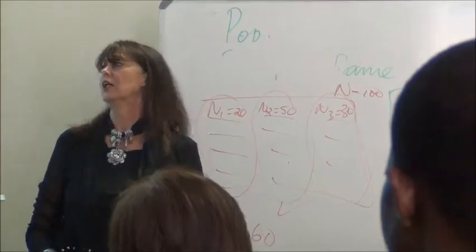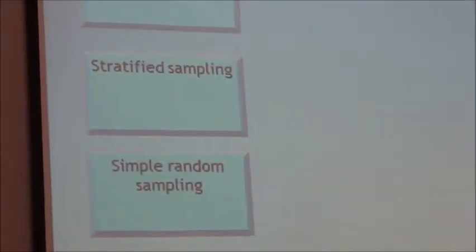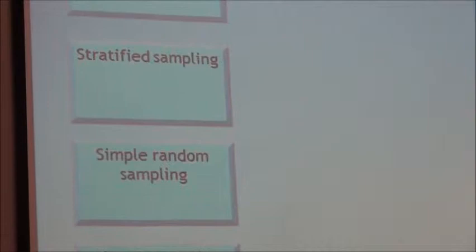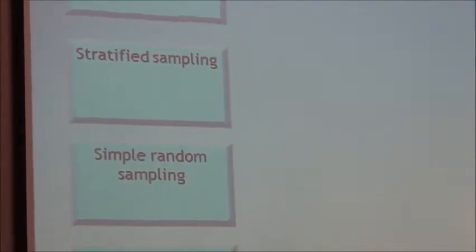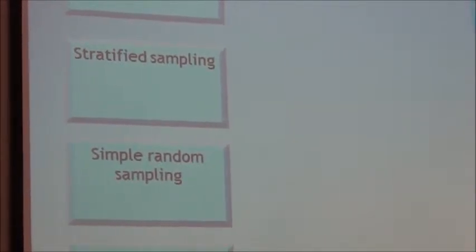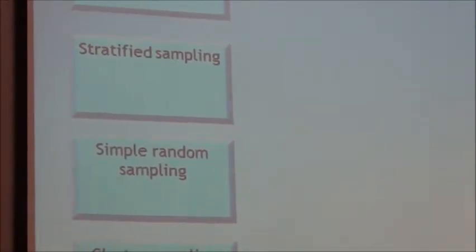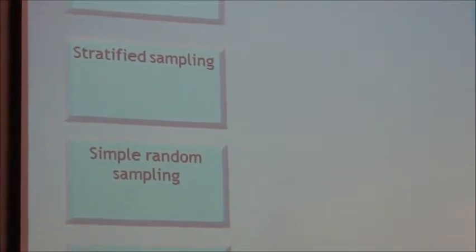In probability sampling, every element has a known probability of being chosen. In random sampling specifically, every element has the same probability of being chosen — so all elements are equally likely. This makes it totally fair and unbiased, which is why random sampling is used in inferential statistics.